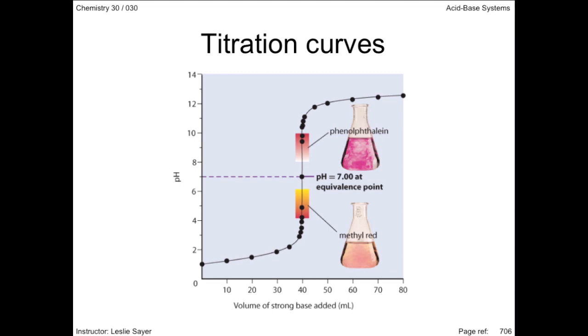Phenolphthalein doesn't change color at pH 7, but from 8.2 to 10. Phenol red will change color from 4.8 to 6. Bromothymol blue would be a better indicator because it changes color between 6 and 7.6. When you look at this titration curve, any of these indicators would seem suitable, because the difference in volume of base added when the pH changes from 4 to 10 is so negligible as to not make any significant difference.